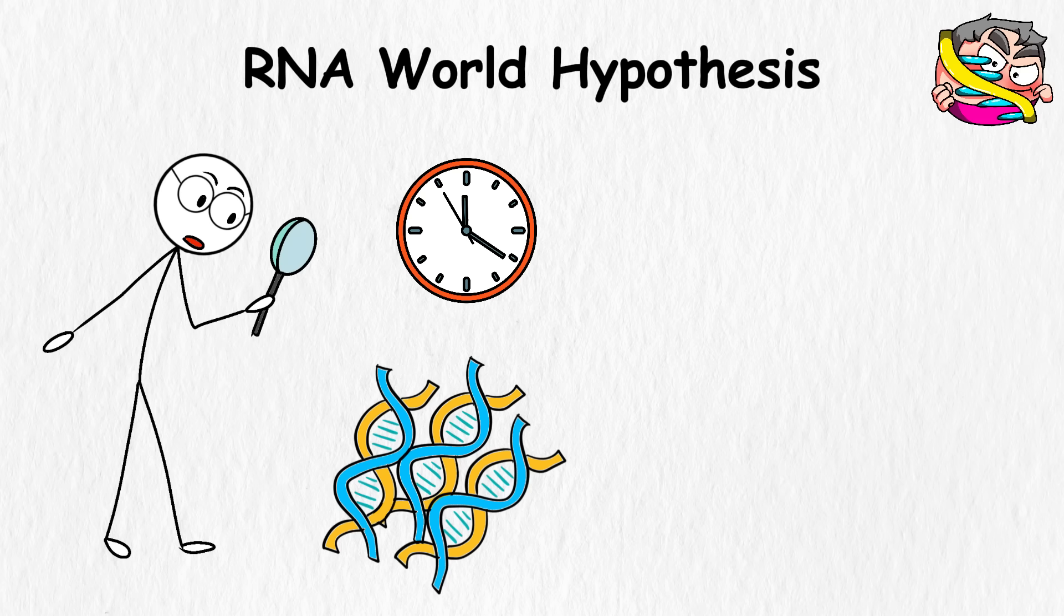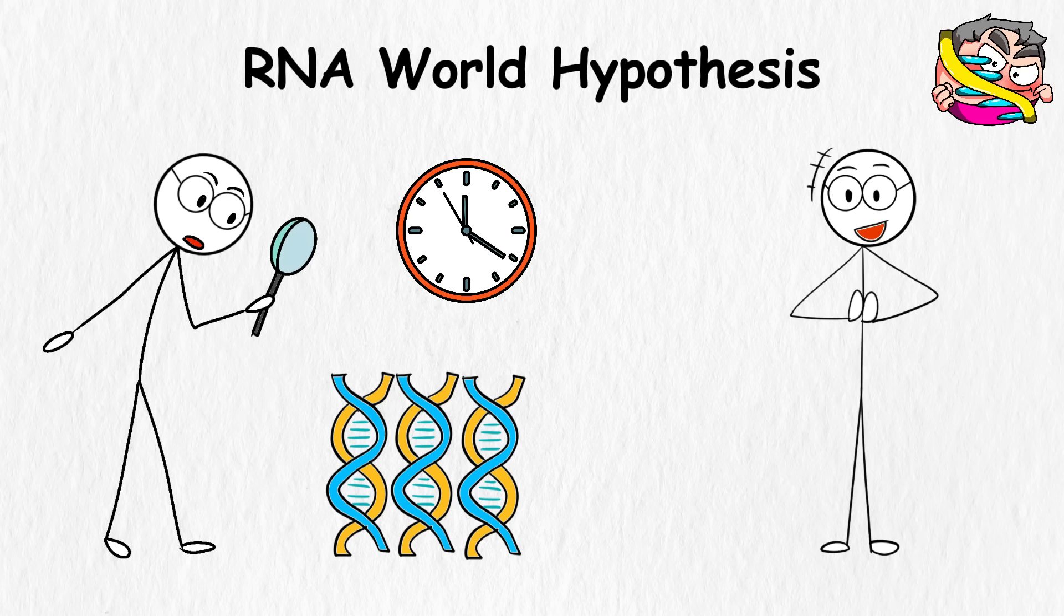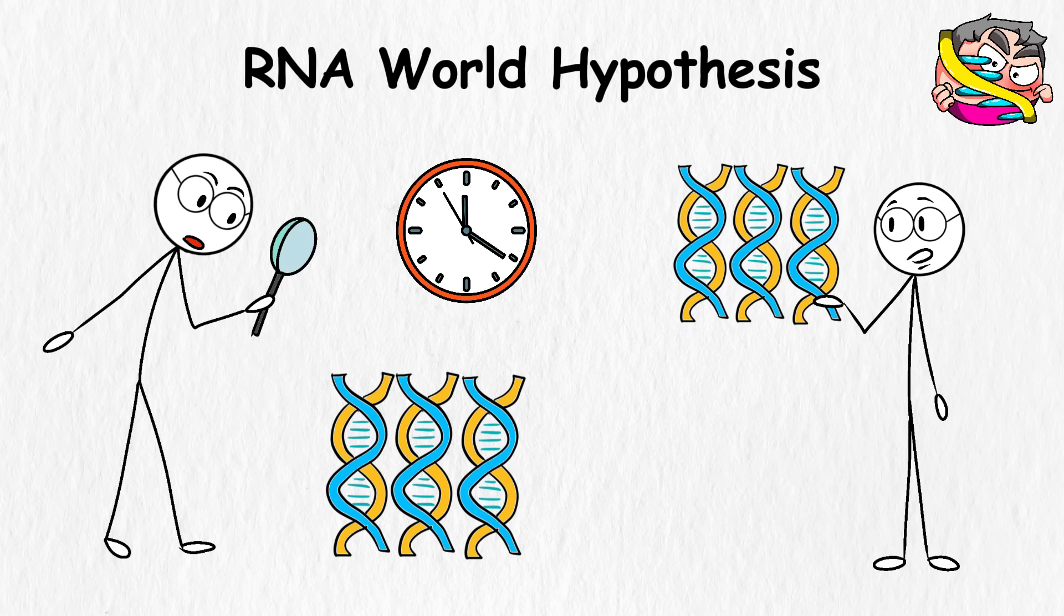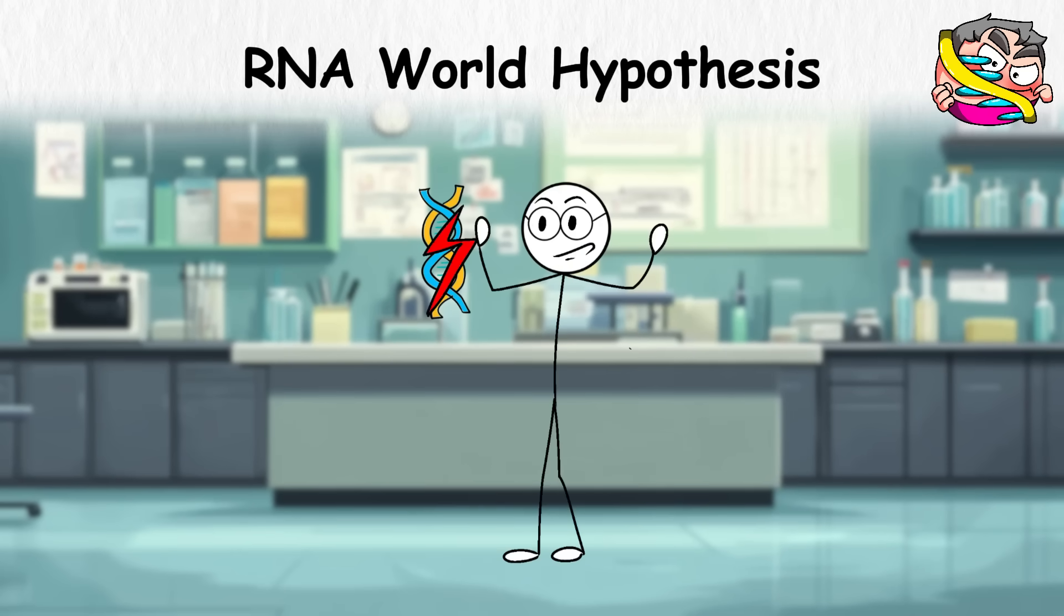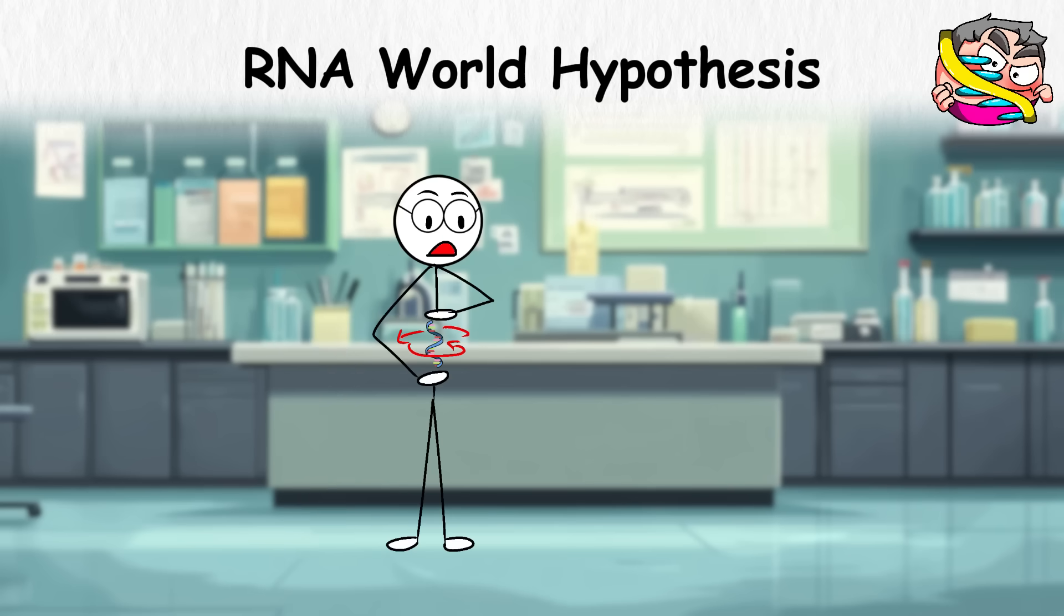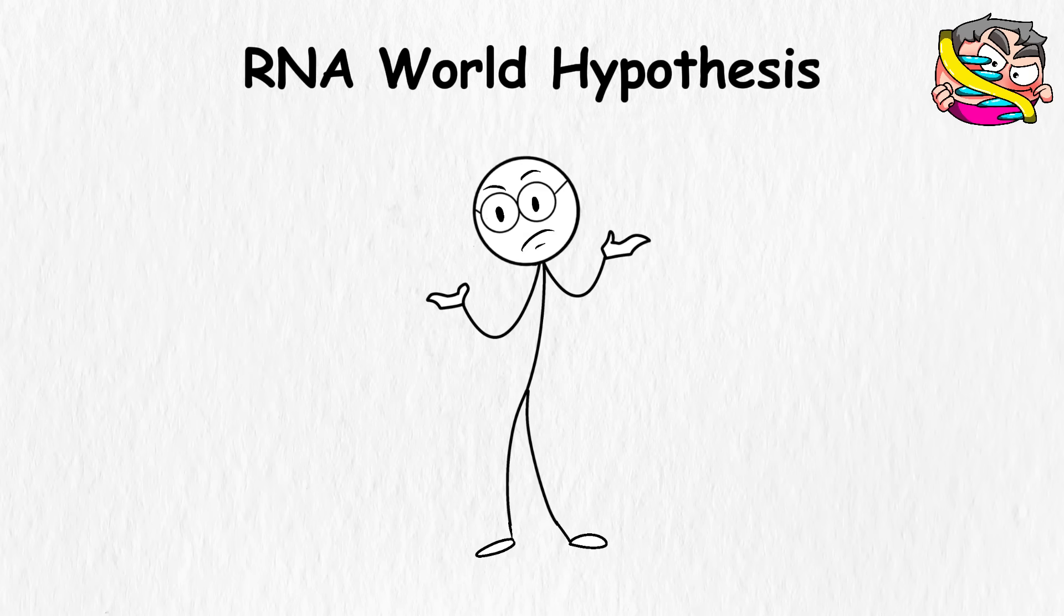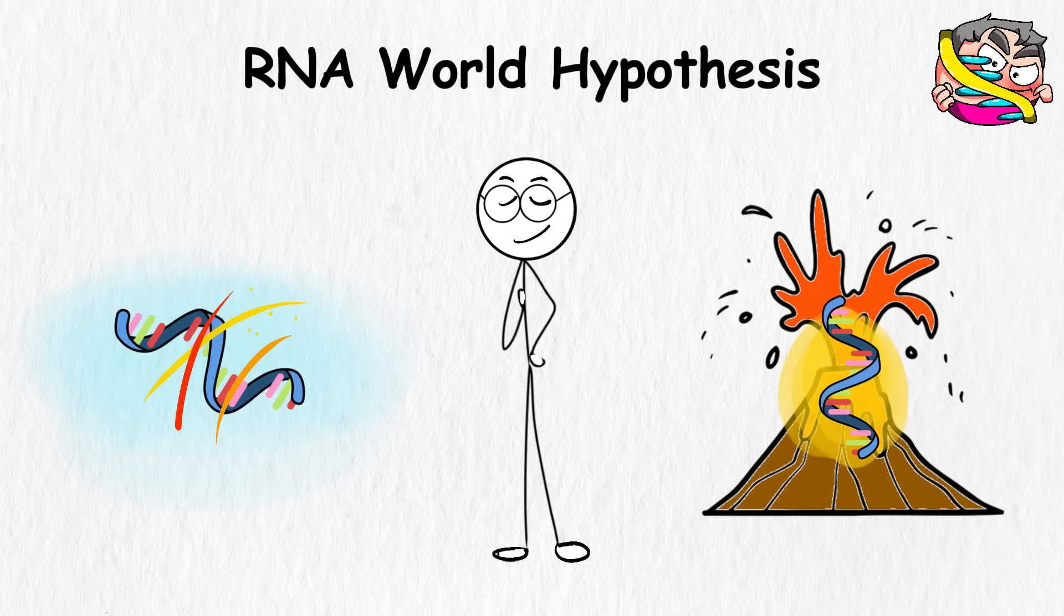Over time, those strands got more complicated. Some built simple shells. Some started teaming up. And eventually, all that repetition turned into something we'd call alive. Supporters say it solves a big problem. DNA is powerful, but it's kind of lazy. It doesn't work without a lot of help. RNA is simpler. It's the kind of molecule that might have gotten the whole thing rolling without needing a full lab setup. No one knows where the first RNA came from. Maybe a volcano. Maybe space. Maybe a very lucky splash in the right soup. But if this theory is right, then life started with a molecule that basically said, I'll do it myself.